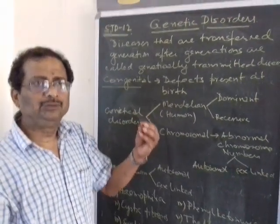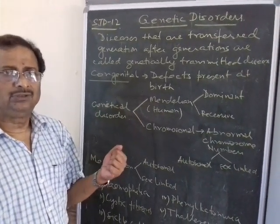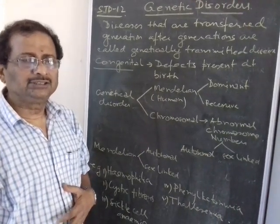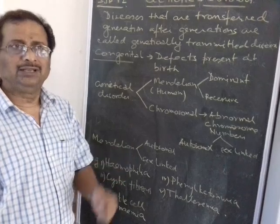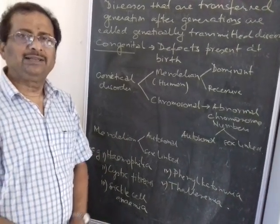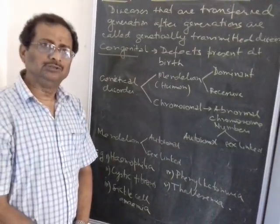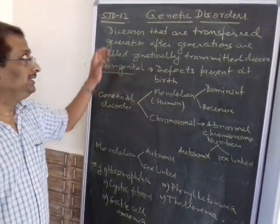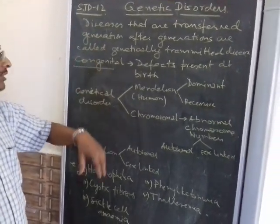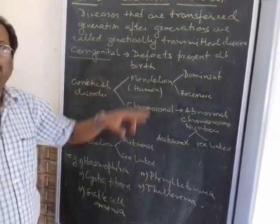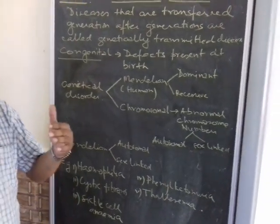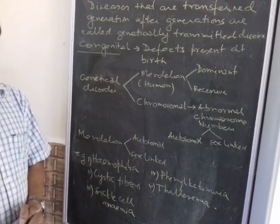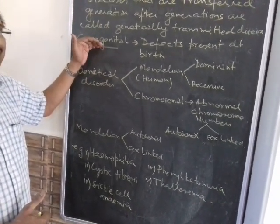Genetical disorders can be due to a faulty gene, which we generally call Mendelian disorders, or they can be due to abnormal chromosomal numbers, which we call chromosomal aberrations. There is also a difference between a genetical disorder and a congenital disorder — a congenital disorder is a defect present at birth, for example, a child born with a hole in the heart.